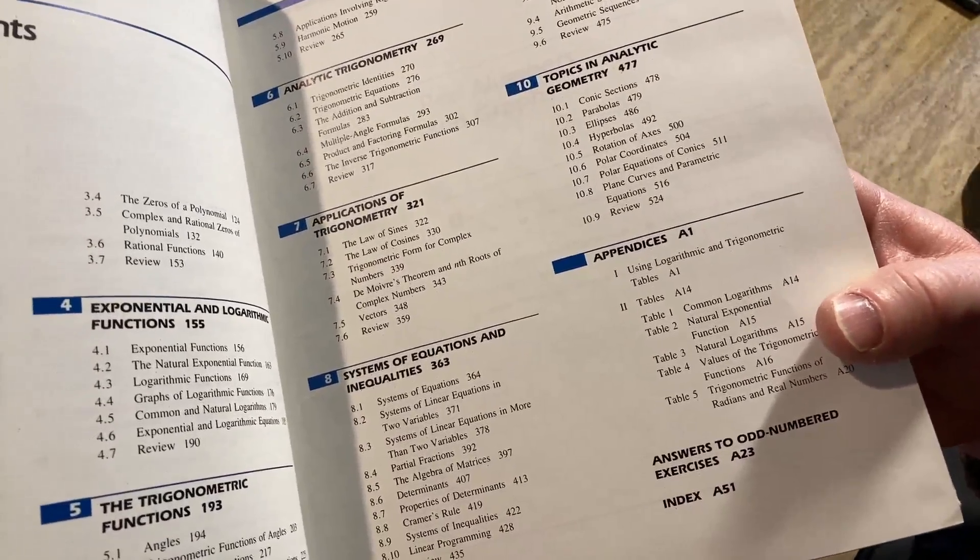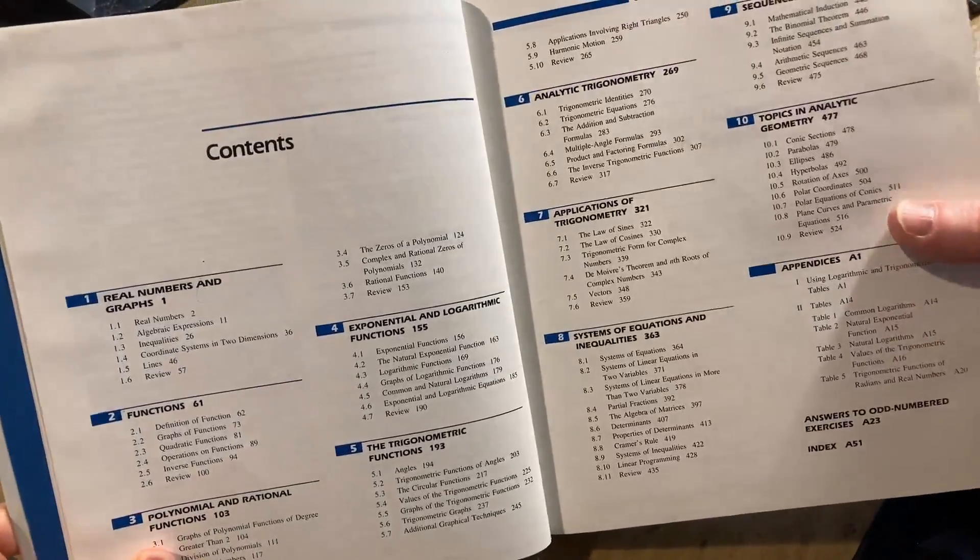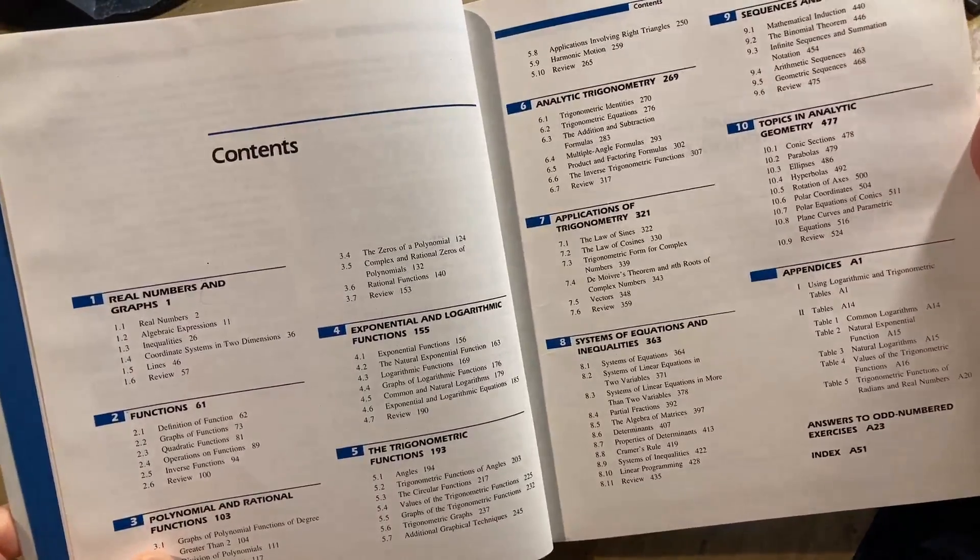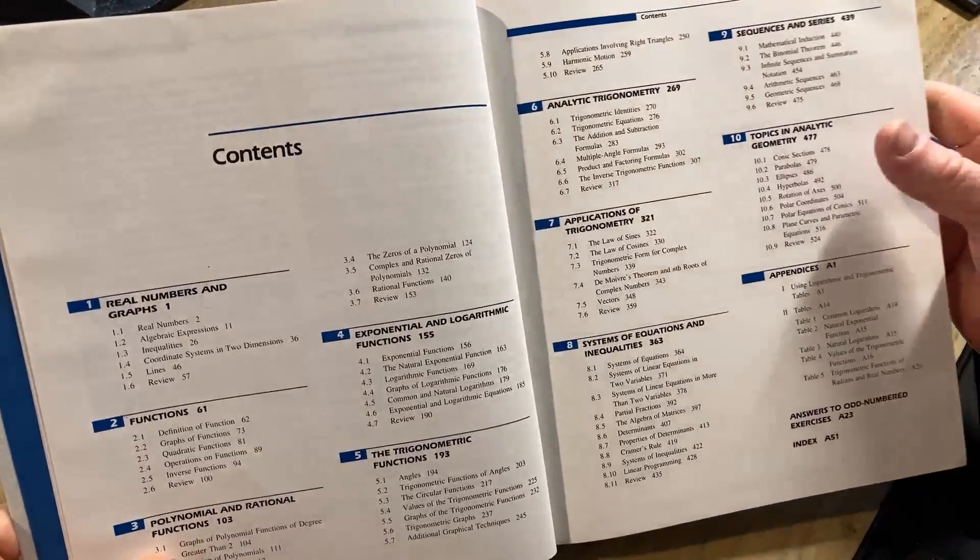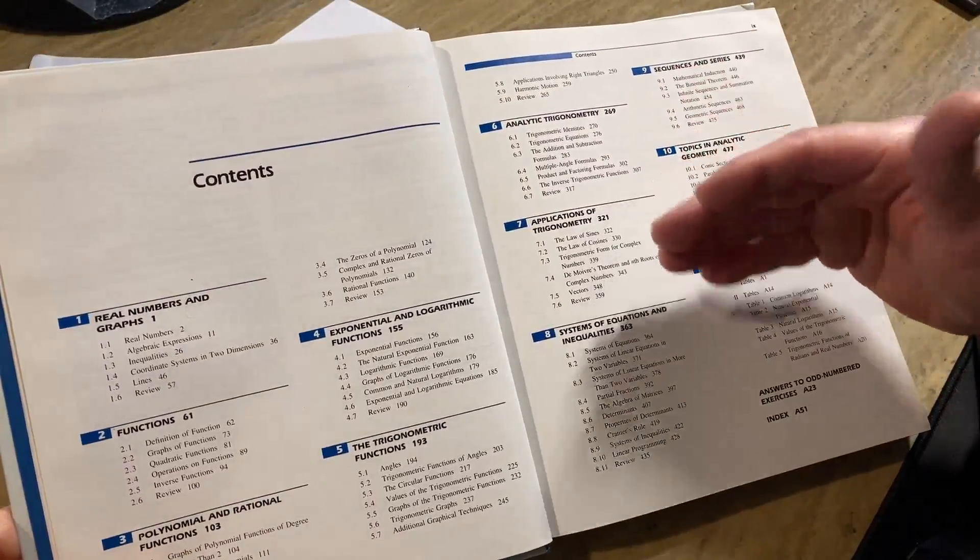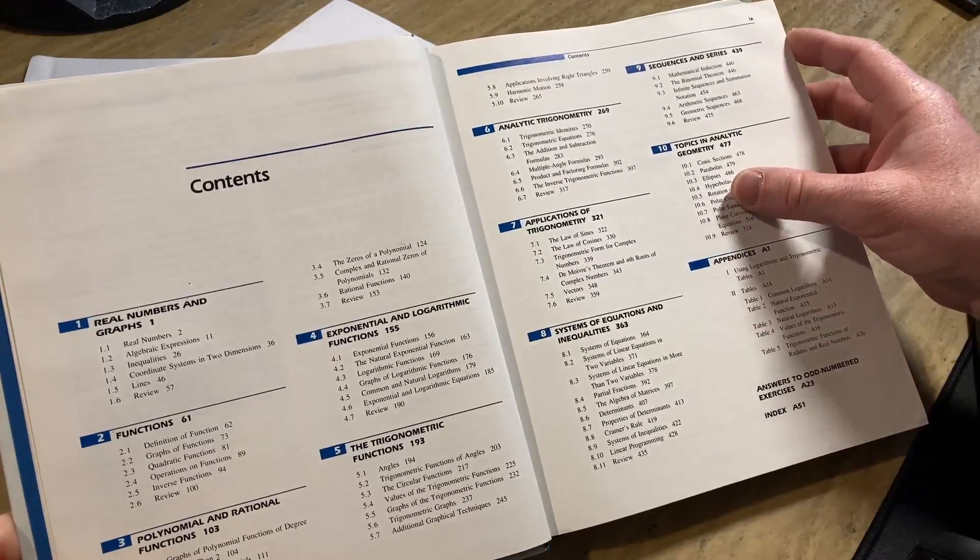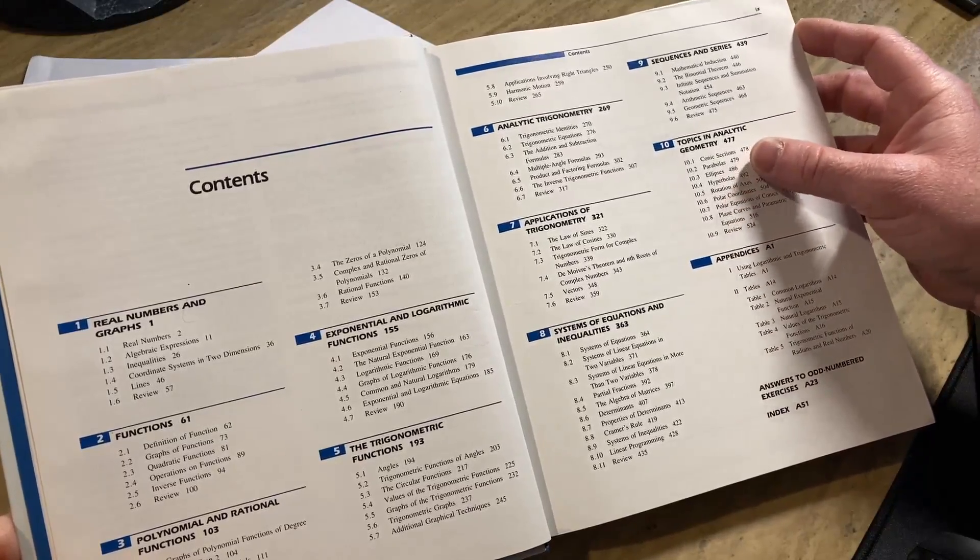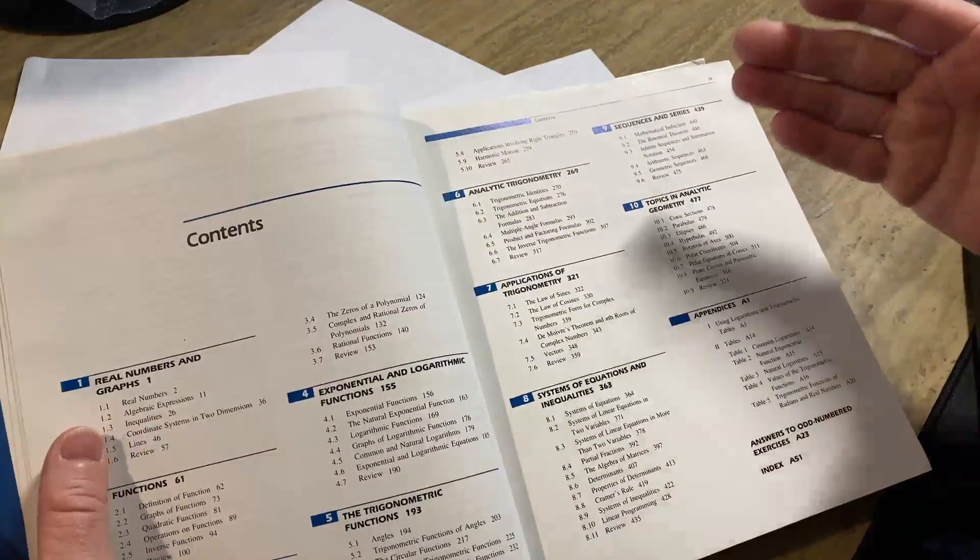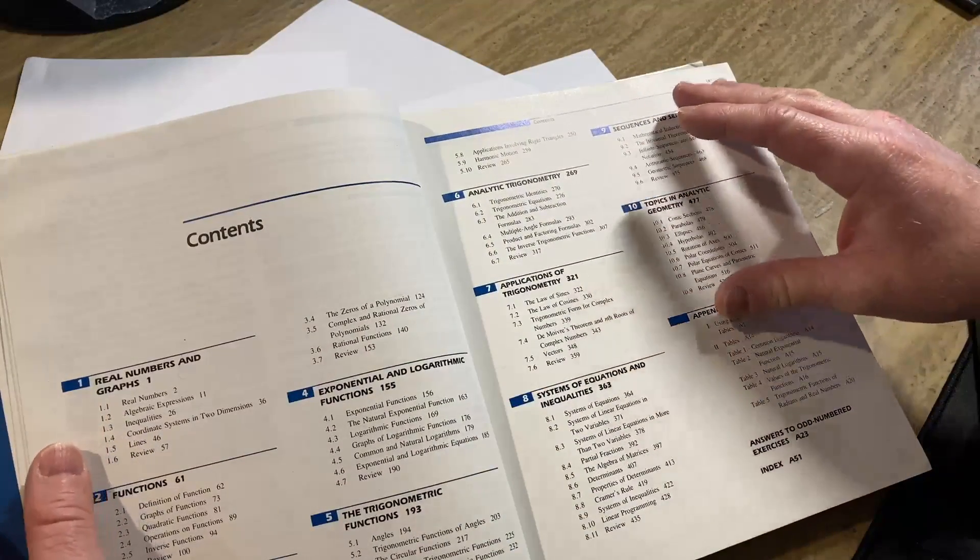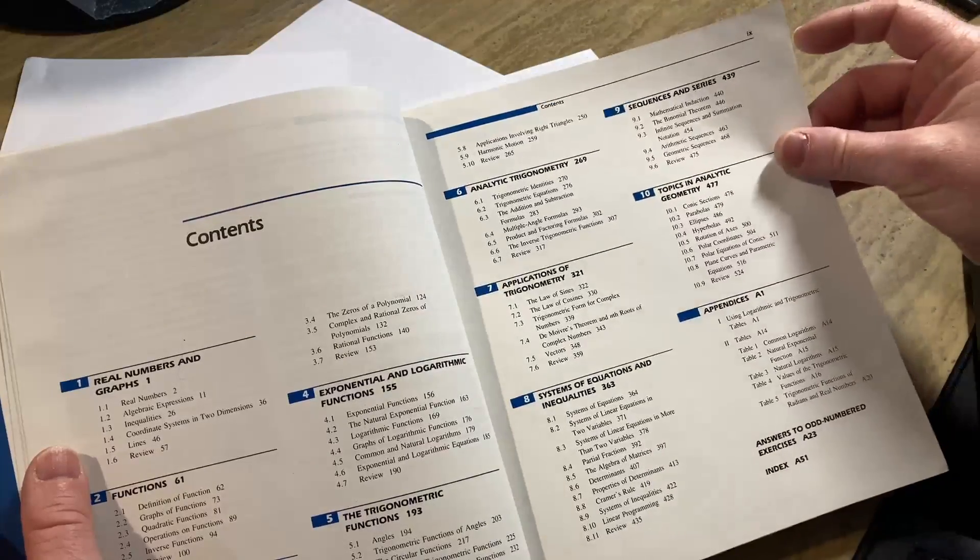And you have answers to the odd numbered problems. So if you wanted to learn math using this book, just know that this book covers the material that is typically taught in the US in two courses. The first one would be precalculus and the second one would be trigonometry. So in theory, if you're taking pre-calc or trig in a college-level course,